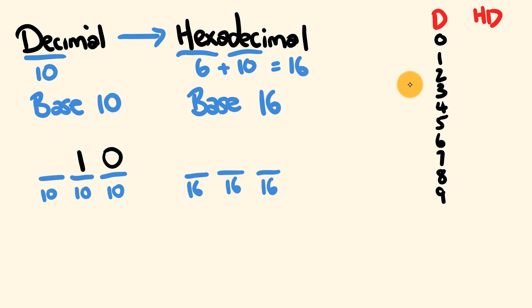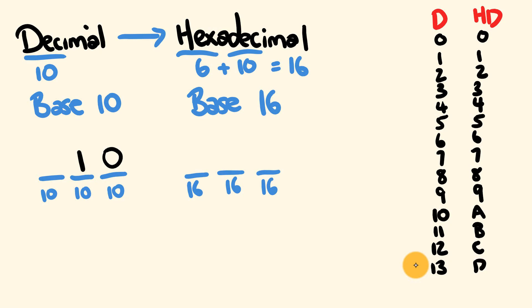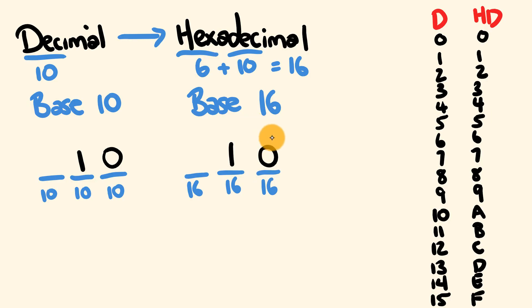Hexadecimal also starts with 0–9, but then continues: 10 = A, 11 = B, 12 = C, 13 = D, 14 = E, 15 = F. Once you hit 16, you put a 0 and carry a 1, so 16 in base 16 is written as '10'. That's a base 16 number.